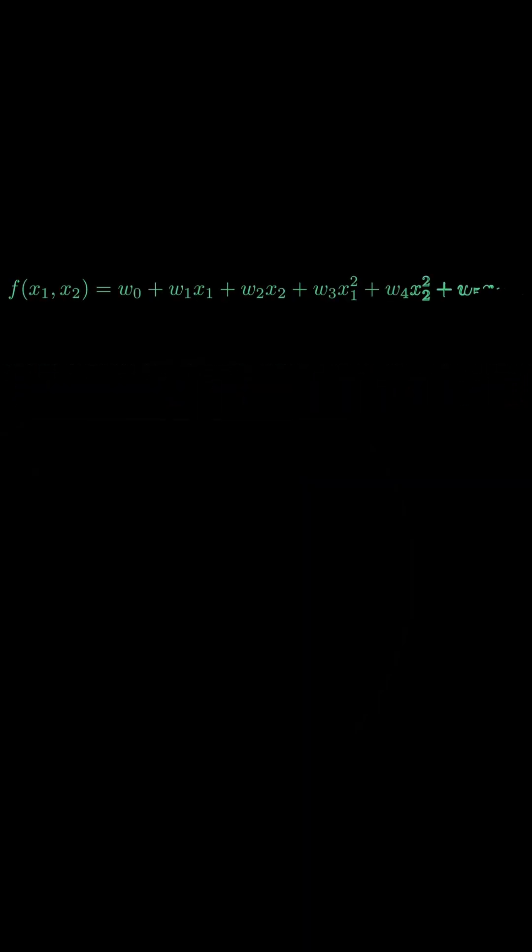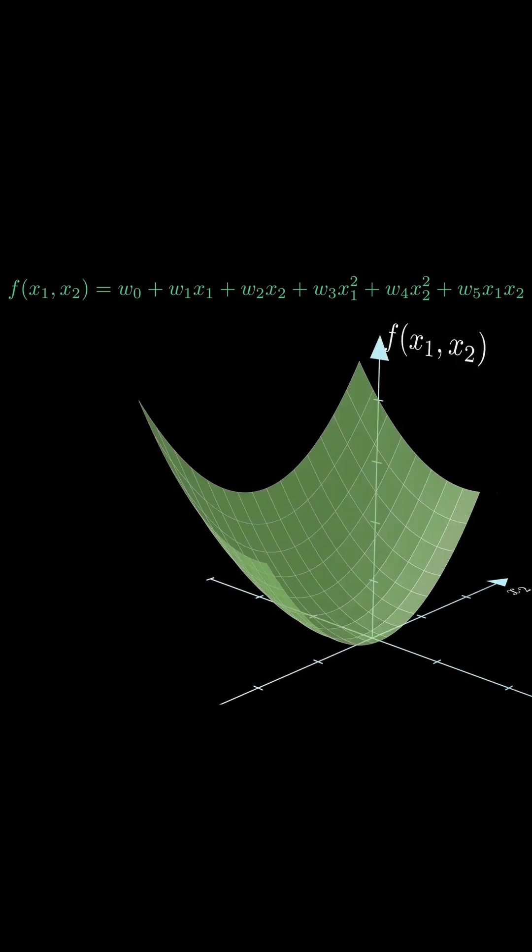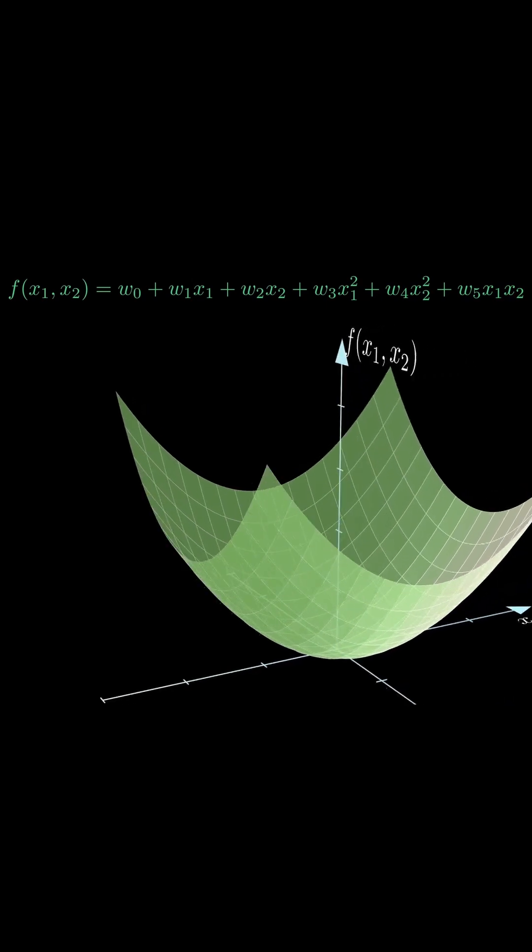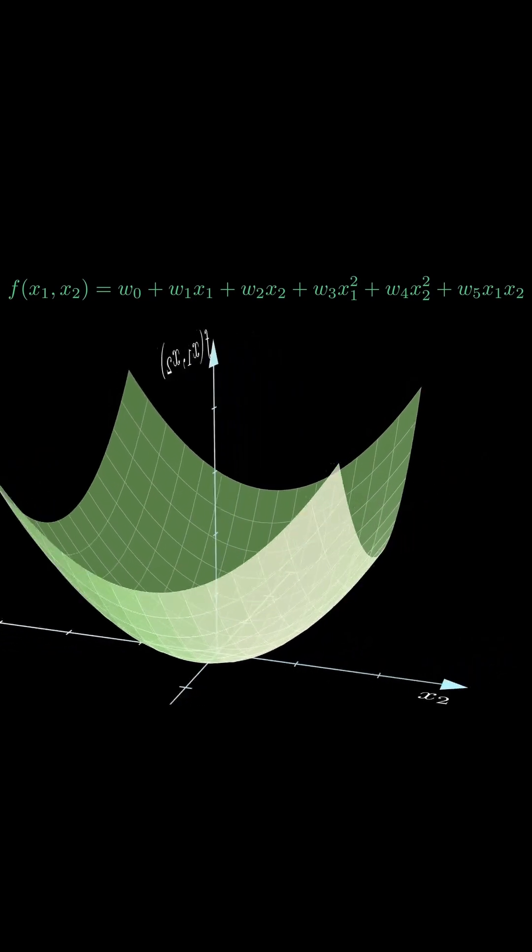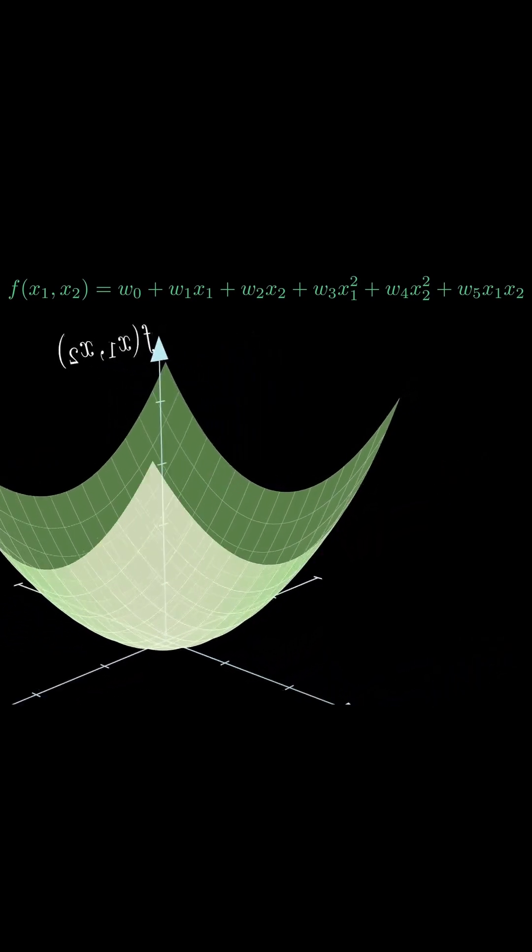If you have multiple variables, it's a multivariate polynomial. Up to two variables, you can still plot it together with the dependent variable. With three variables, you have to imagine it. Use your mathematical intuition.